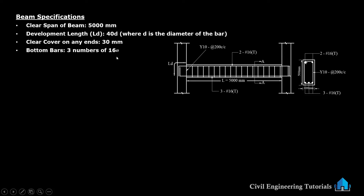Bottom bars: 3 numbers of 16 mm diameter. This bar is the bottom bar and this is the top bar. 3 numbers of bars are provided here on the bottom part. Here in the section, when you cut the section, you can see 3 numbers of bars. So, bottom: 3 numbers of bars of 16 mm diameter.